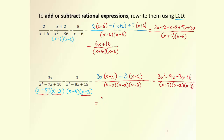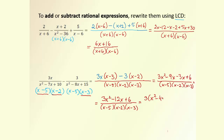After collecting like terms, we have 3x² − 12x + 6 over (x − 5)(x − 2)(x − 3). It's a good idea to check if we can factor the numerator usefully. If we take the 3 out, we get x² − 4x + 2, which cannot be factored — product 2 and sum 4 is impossible. So this is the final answer.